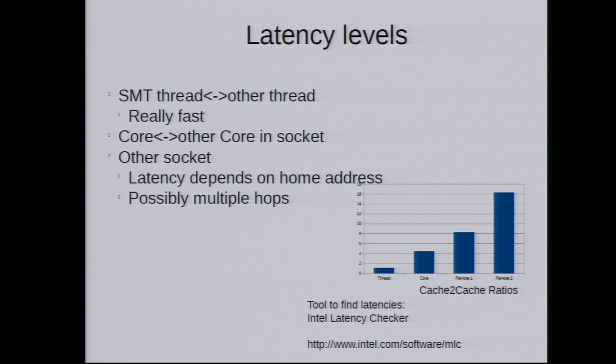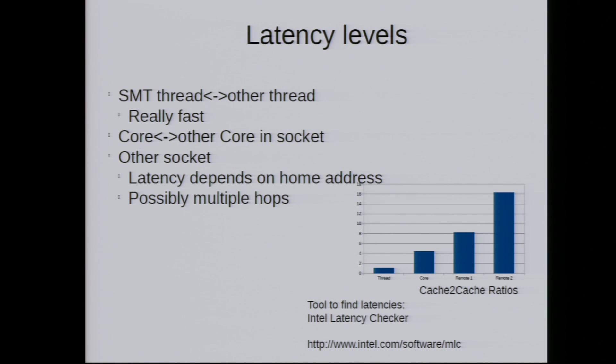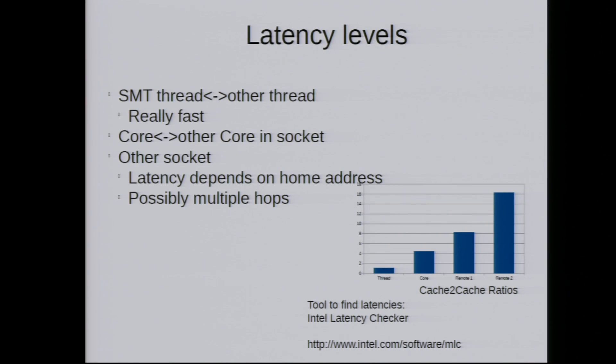When doing communication, think about latency levels. If you have hyper-threading (SMT), talking to another thread on the same core is really fast — they share everything. The next level is another core on the same socket. Modern CPUs have ring interconnects so there are latency differences depending on how many ring stops, but it's typically not an order-of-magnitude difference. Talking to another socket — in a two-socket or four-socket system — is much, much slower due to speed-of-light issues over the motherboard connection. There's also Intel's home snoop algorithm where latency depends on where the cache line is physically located.